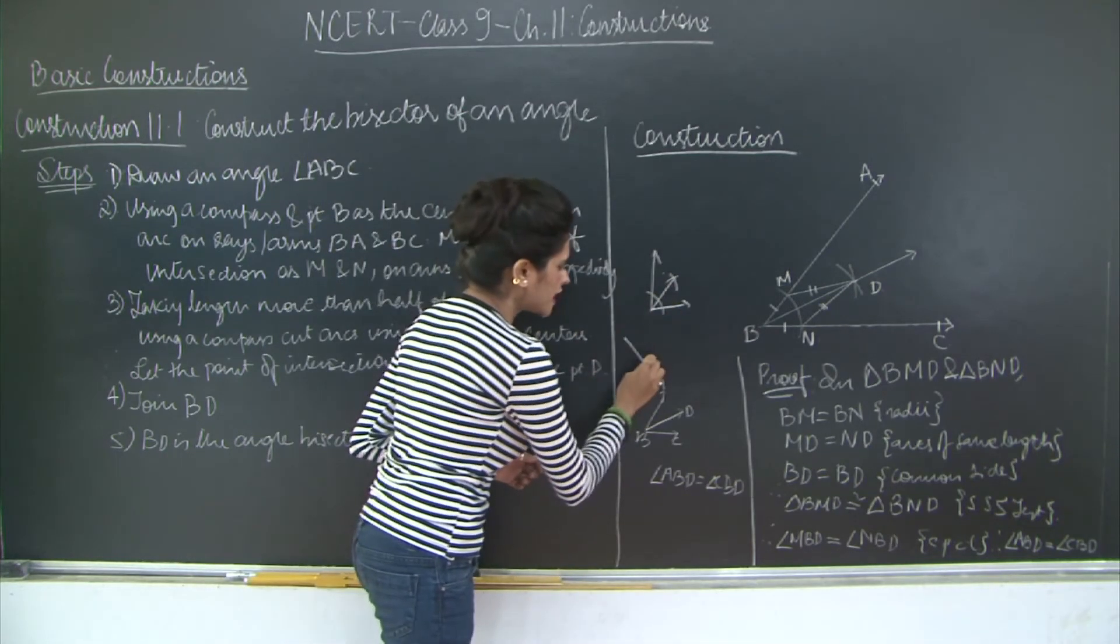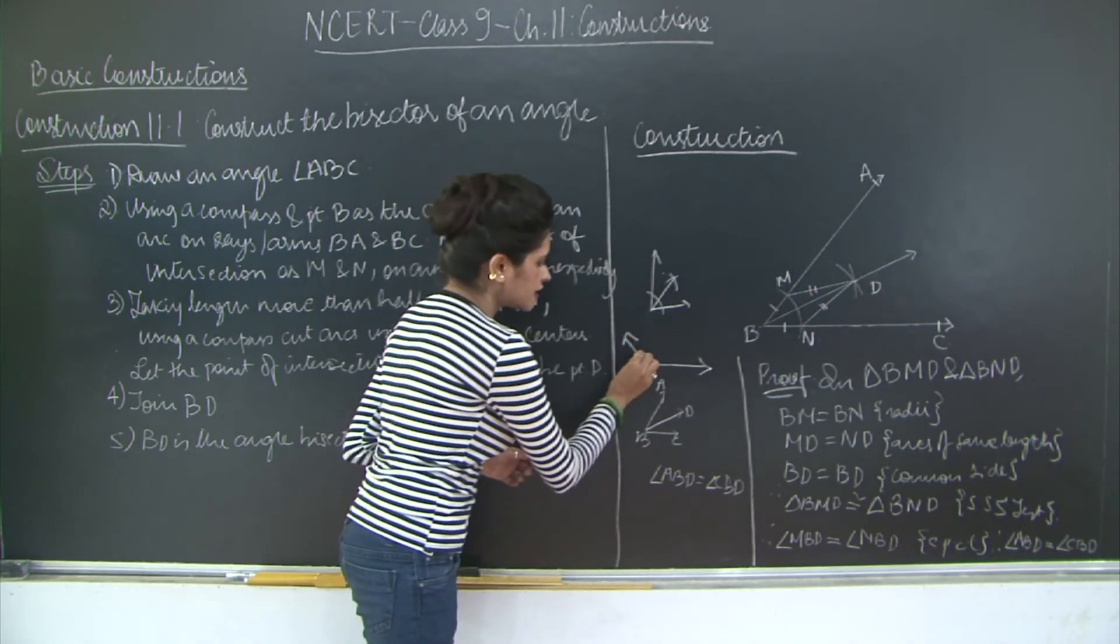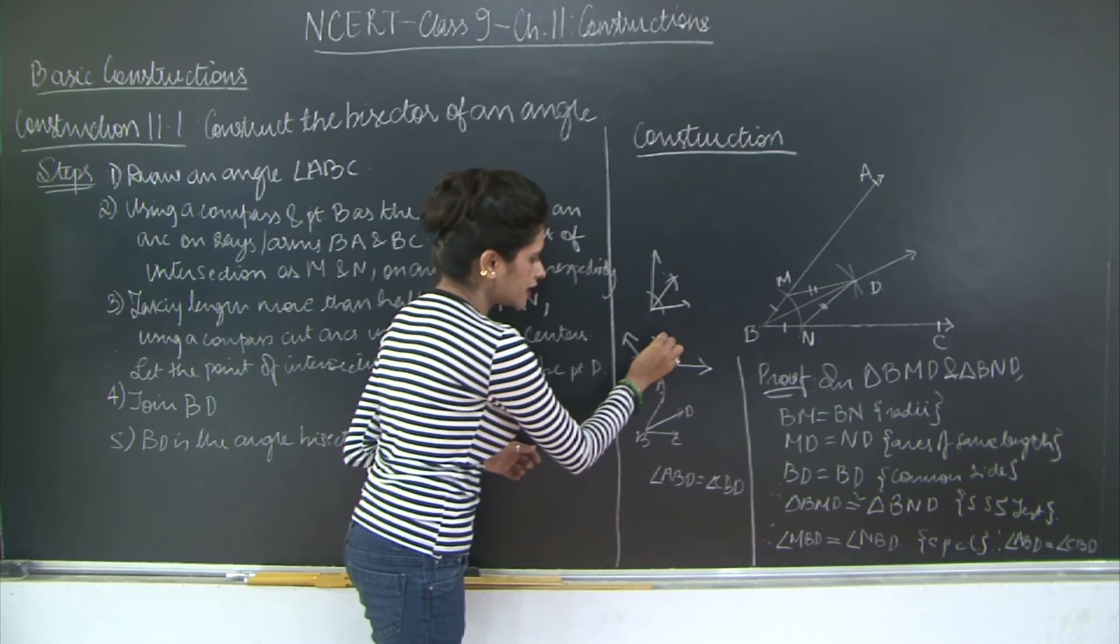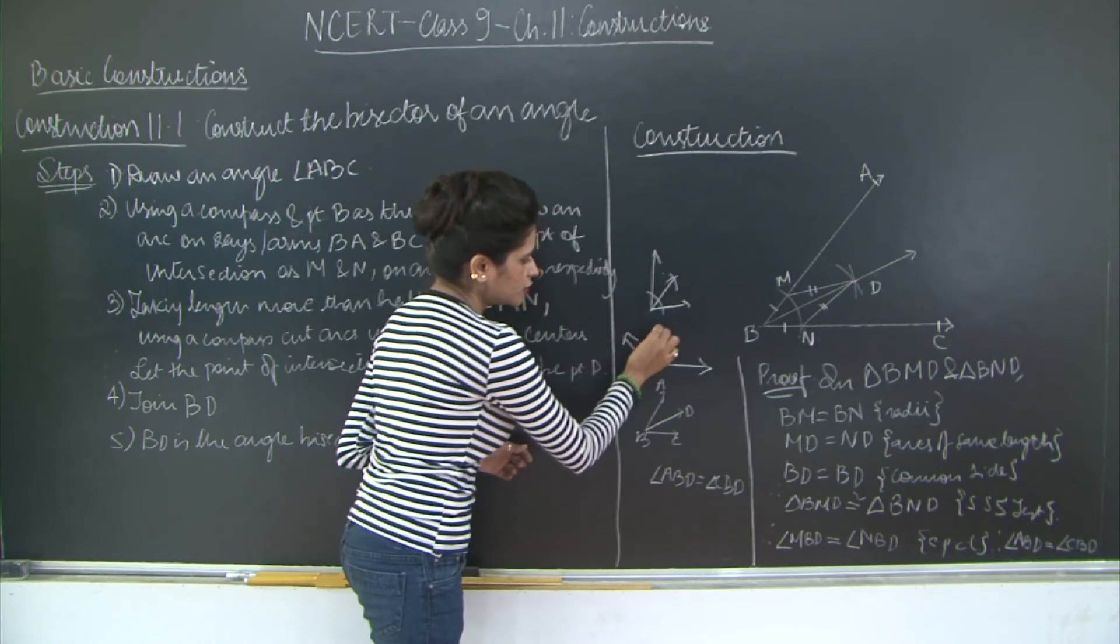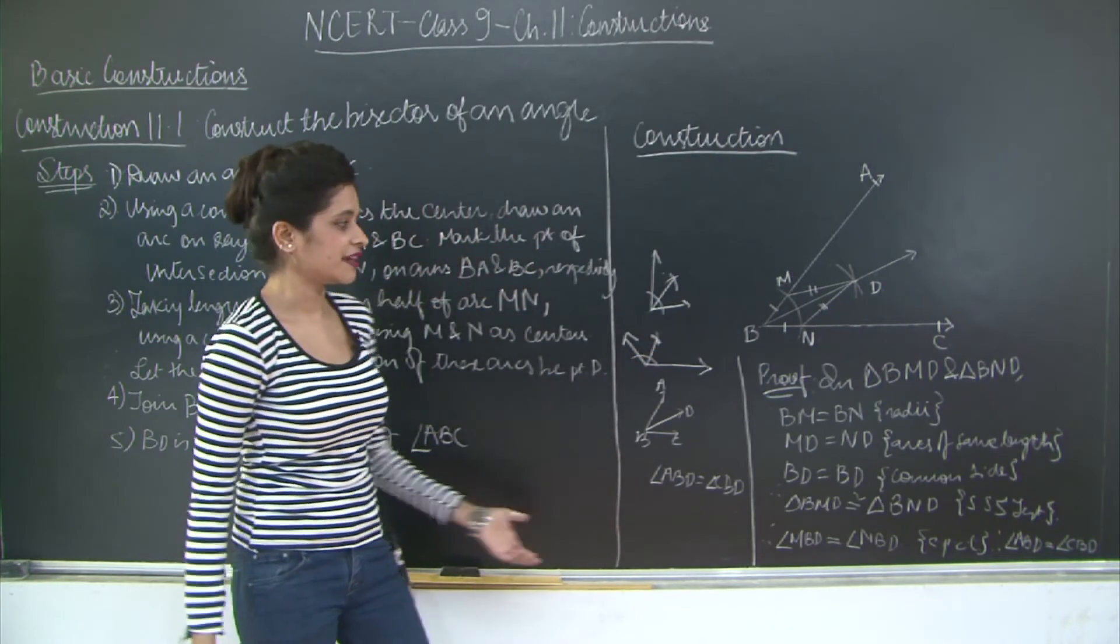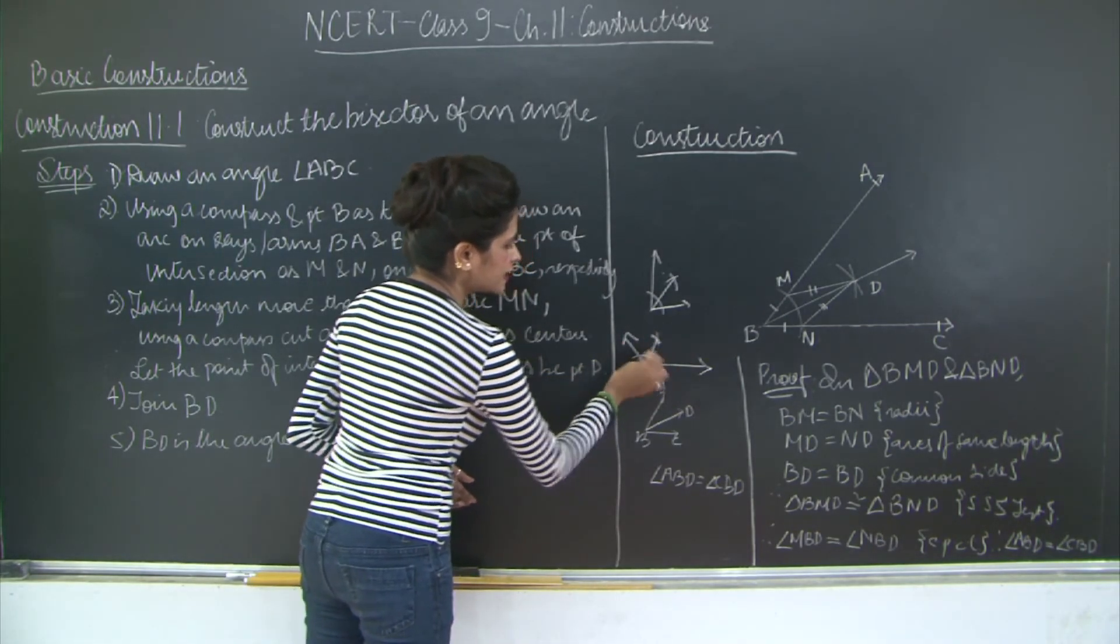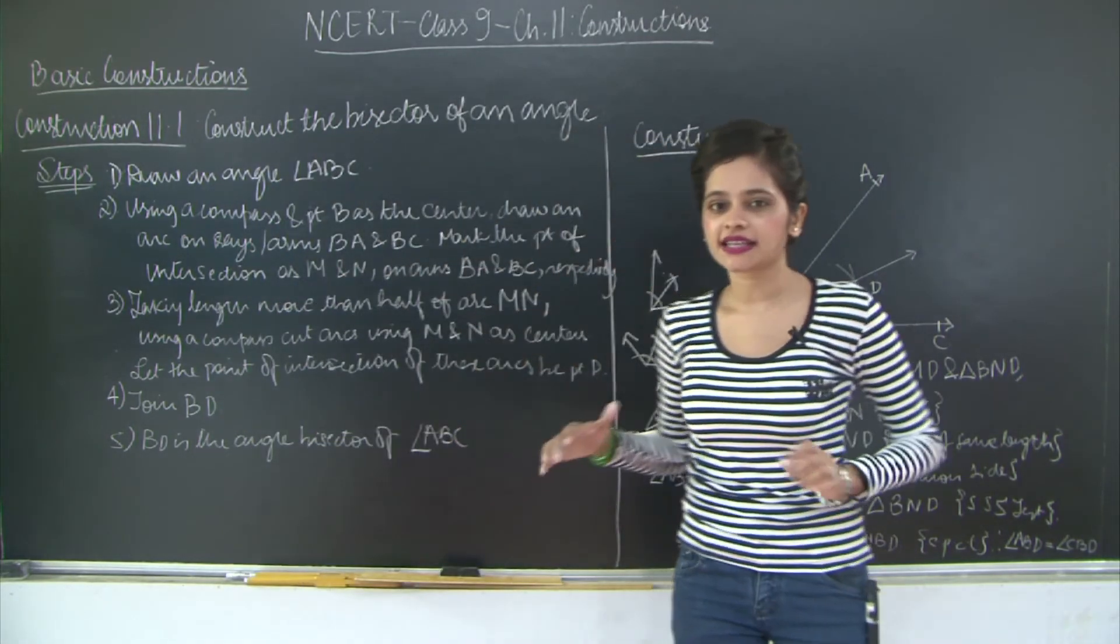Even if you have an obtuse angle triangle. What you are going to do is cut a small arc here. Then more than half the length using this as a center you cut an arc here. So an arc here. And using this as a center you cut an arc here. Join this with the center. This will be your angle bisector. And these two angles will be equal to each other. This angle and this angle. So please take a look at the steps as well as the construction.